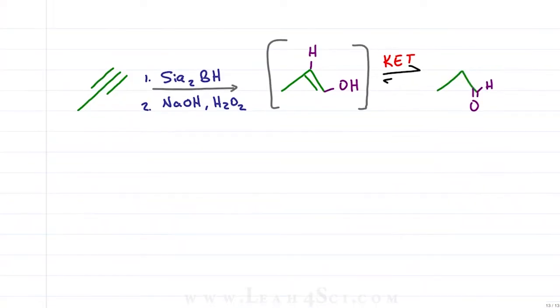We get an aldehyde because this is an anti-Markovnikov reaction and the alcohol, therefore the carbonyl, adds to the final carbon, whereas if you want an internal carbonyl, a ketone, you need to use the oxymercuration reaction which I teach in the previous video.